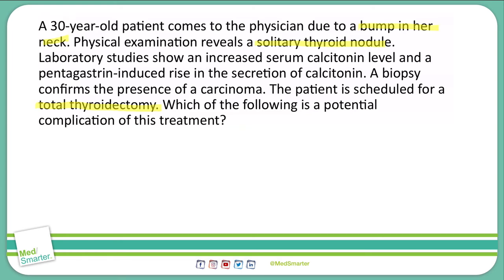We're being told that the patient will be having a total thyroidectomy. Sometimes these questions may not give you that directly — they may have you deduce that a total thyroidectomy is occurring, and then you have to find out what the complications of the treatment are. So you can't just ignore everything. But in this case, we're told there's a total thyroidectomy. What are some potential complications? Well, we know there are nerves that run alongside and are close to the thyroid, so if we do a thyroidectomy we can lacerate some of those nerves. The parathyroids sit around the thyroid as well, along with some other structures — muscles and whatnot. Let's remember those things as we check our answer choices.